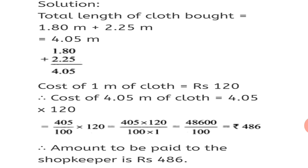So, cost of 1 meter of cloth is equal to rupees 120. Therefore, cost of 4.05 meter of cloth is equal to the total cloth 4.05 into the cost 120 is equal to 4.05 upon 100. We convert it into a fraction. Okay, so 4.05 after point there are 2 places. So, upon 100 you have to take. Into 120 is equal to 4.05 into 120 upon 100 into 1 is equal to 48,600 upon 100. 0,0 gets cancelled and you are left with rupees 486. Therefore, amount to be paid to the shopkeeper is rupees 486.